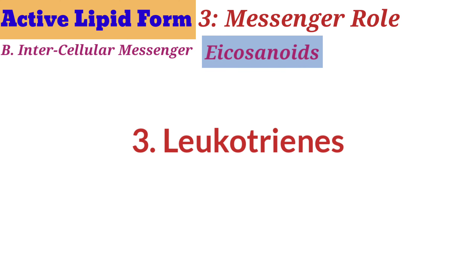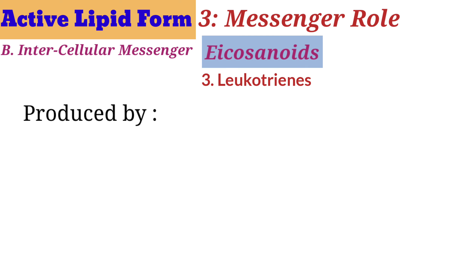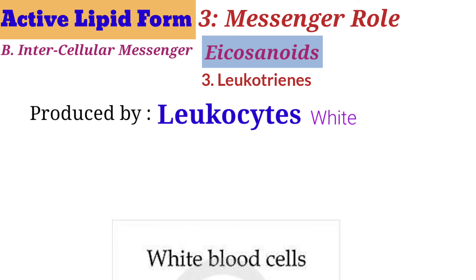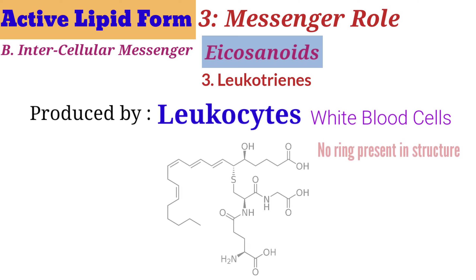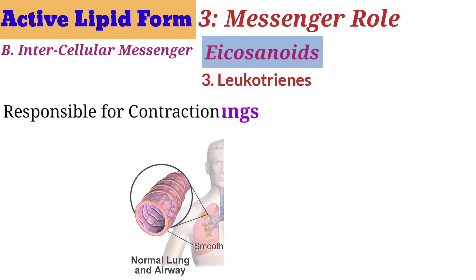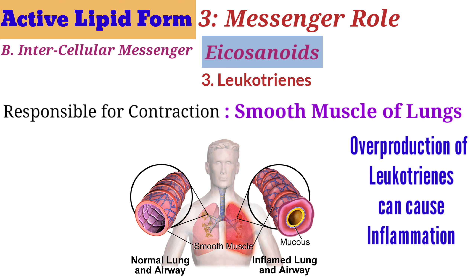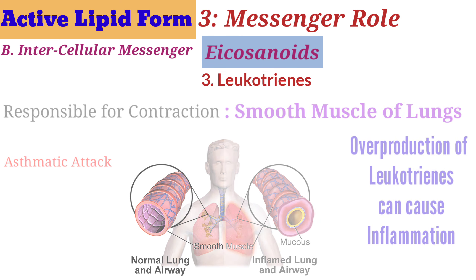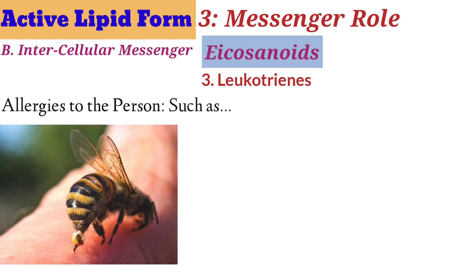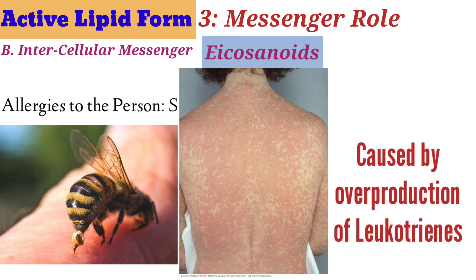The third group of eicosanoids are leukotrienes, produced by leukocytes, commonly known as white blood cells. There is no ring structure present in leukotrienes, but double bonds are present. They are responsible for contraction of smooth muscles in the lungs. Overproduction of leukotrienes may cause asthmatic attacks, and allergic reactions to honey bee stings or penicillin can also be caused by overproduction of leukotrienes.